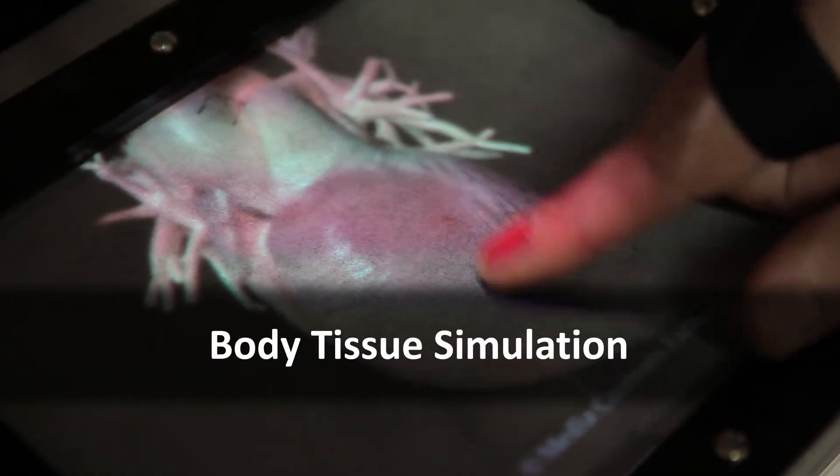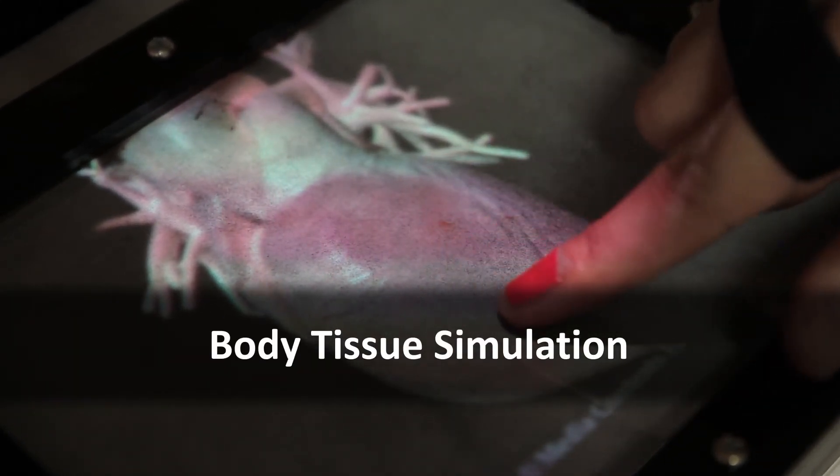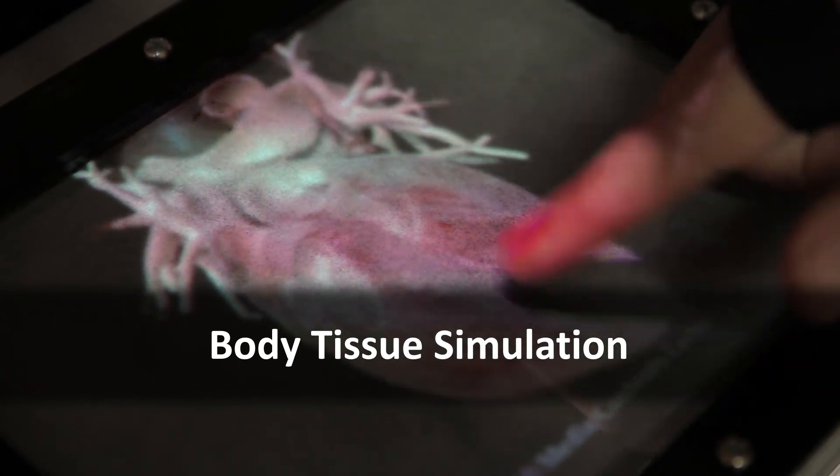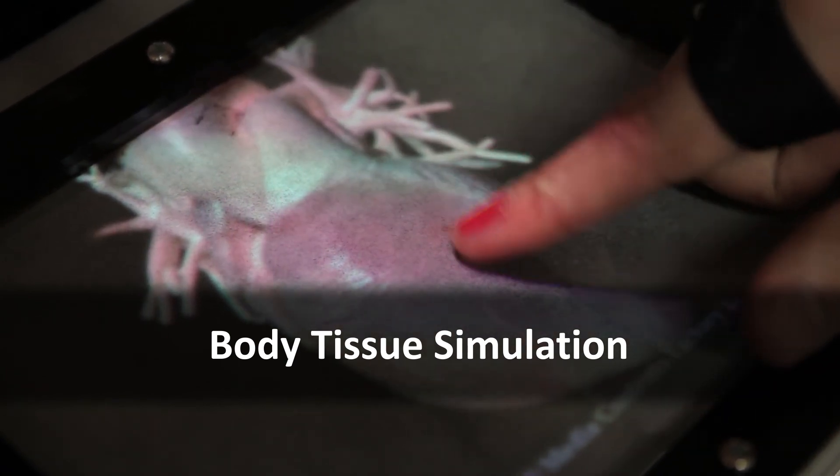Body tissue simulation expresses body tissue texture with electrovibration. Viscosity and deformation can be expressed using the ferrofluid.